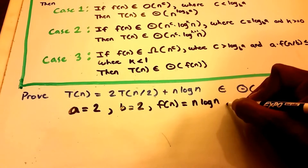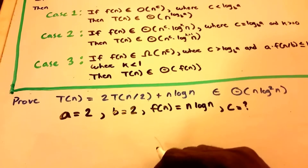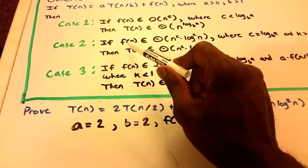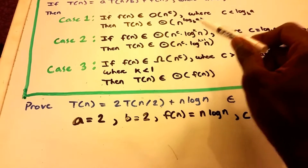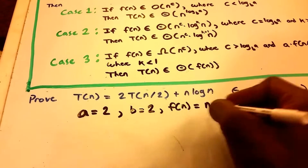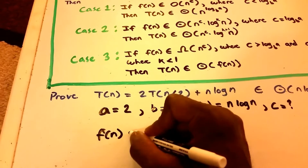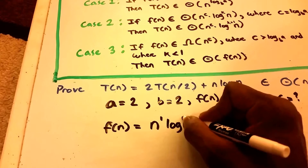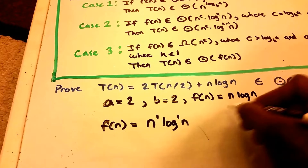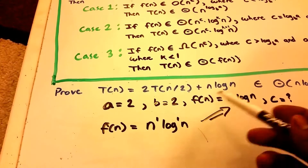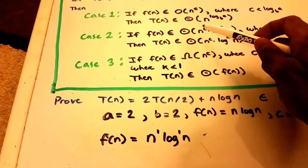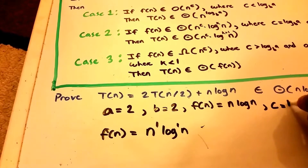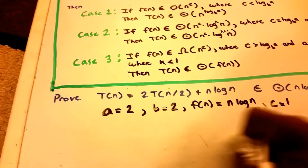We also need to know our C value. Looking at Case 2, we check if our function of n belongs to theta of n to the power of C times log to the power of K of n. We can write F of n as n to the power of 1 times log to the power of 1 of n. This tells us that our C value is 1.